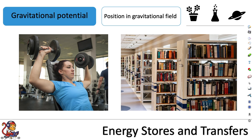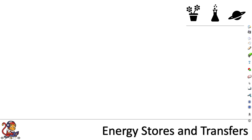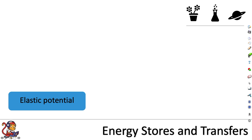Or if we were to look at this bookshelf over here, the books on the higher shelf will have a larger store of gravitational potential energy than the books on the shelves lower down. Another type of energy store is elastic potential energy.